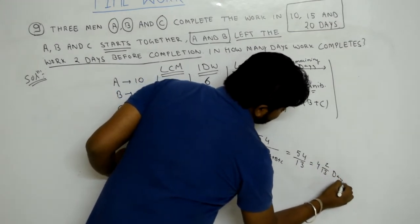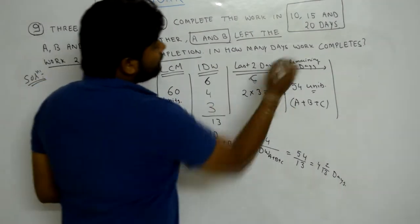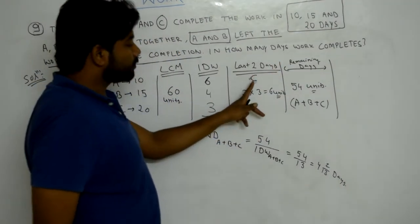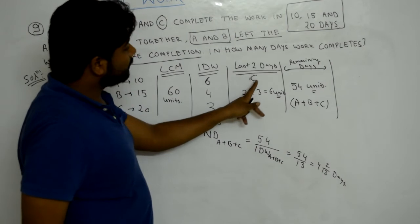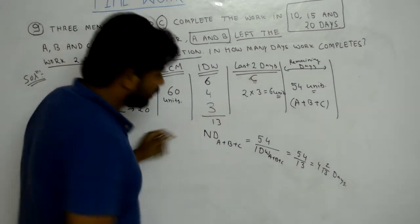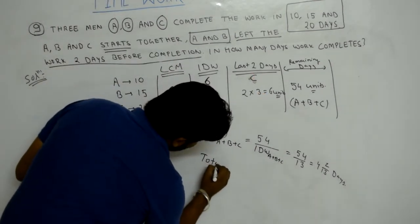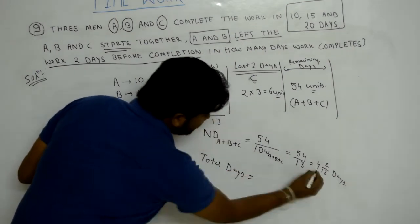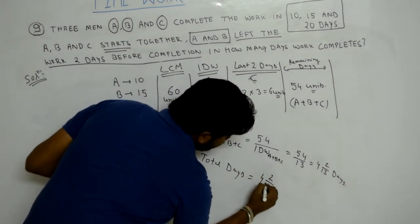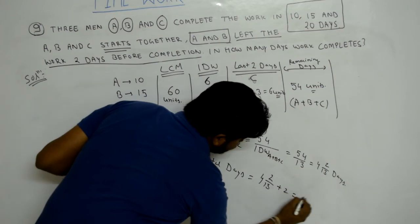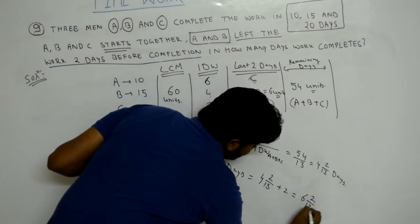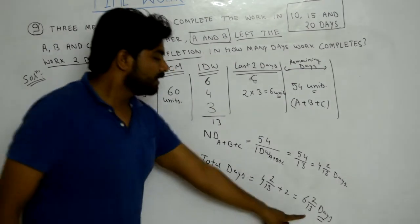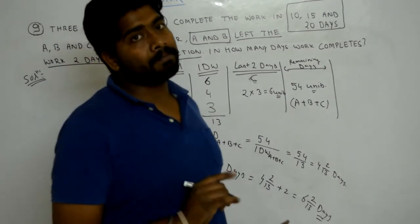The remaining days were 4 and 2/13. Adding the last 2 days when only C worked, the total number of days in which the work was completed is 4 and 2/13 plus 2, that is 6 and 2/13 days.